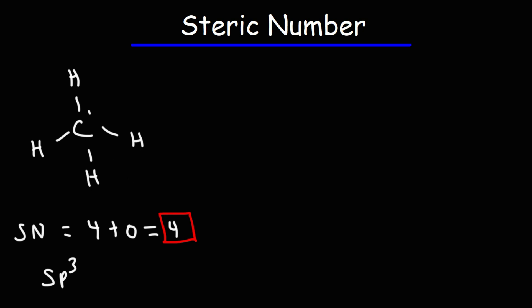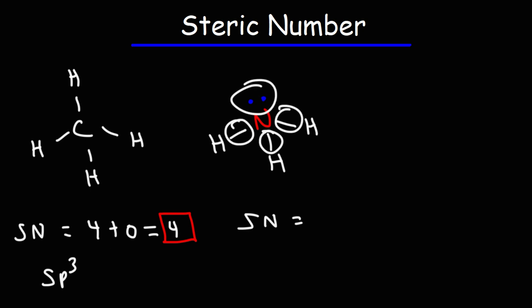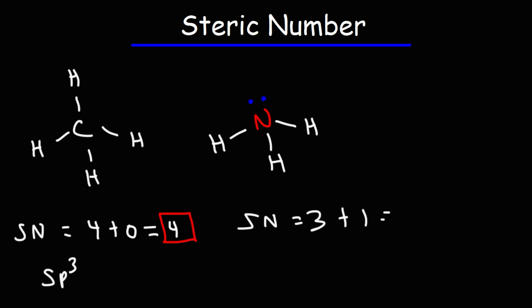Now let's look at ammonia, NH3. What is the steric number of the central nitrogen atom? Nitrogen has three sigma bonds and one lone pair, so three plus one gives us a steric number of four. That means nitrogen has sp3 hybrid orbitals, which also means that the lone pair is in an sp3 hybrid orbital.